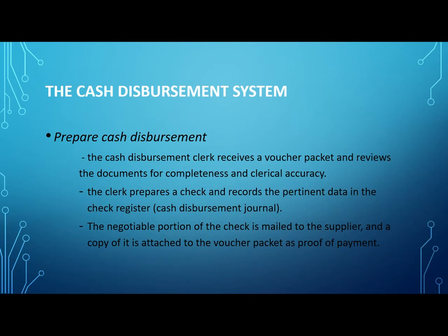Prepare cash disbursement. The cash disbursement clerk receives a voucher packet and reviews the documents for completeness and clerical accuracy. The clerk prepares a check and records the pertinent data in the check register, also called the cash disbursements journal. Depending on the organization's materiality threshold, the check may require additional approval by the cash disbursements department manager or treasurer. The negotiable portion of the check is mailed to the supplier and a copy is attached to the voucher packet as proof of payment.